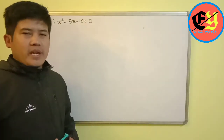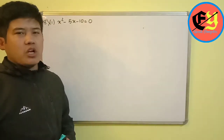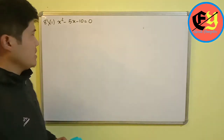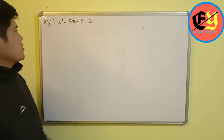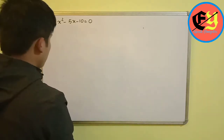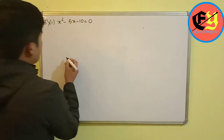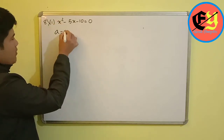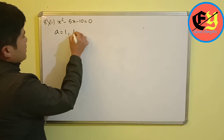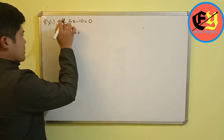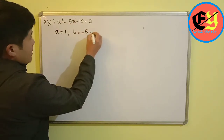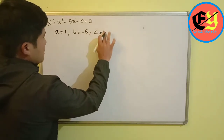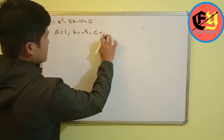Now question number 8, part 1: solve the quadratic equation for x and give your answer correct to two decimal places. The equation is: x squared minus 5x minus 10 equals 0. Here a equals 1, b equals minus 5, and c equals minus 10.